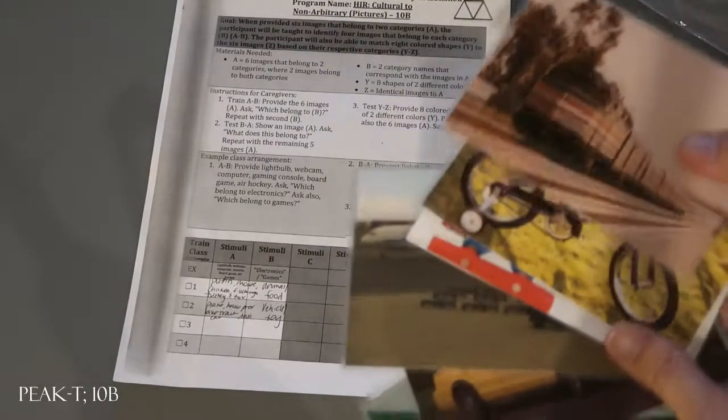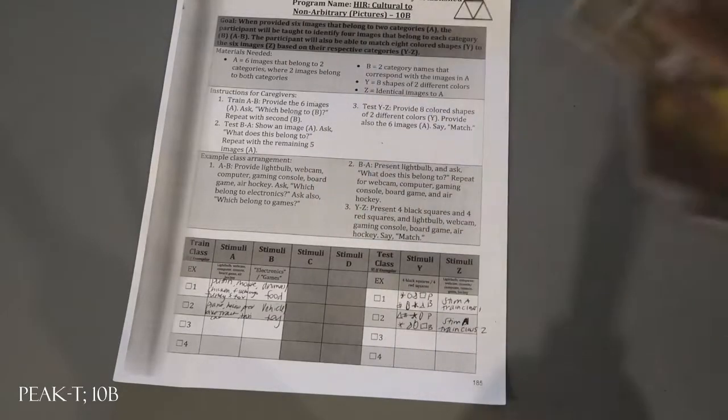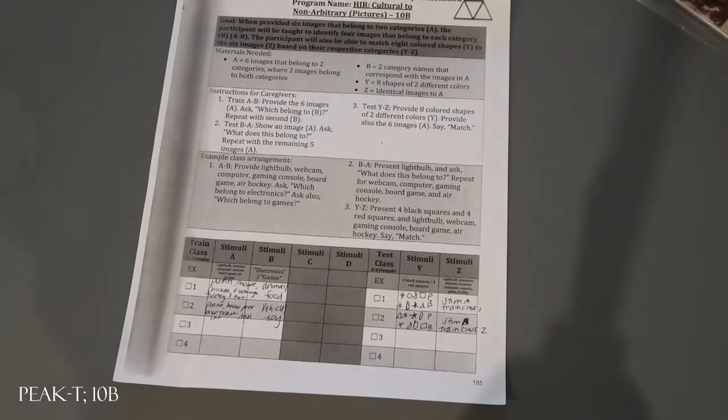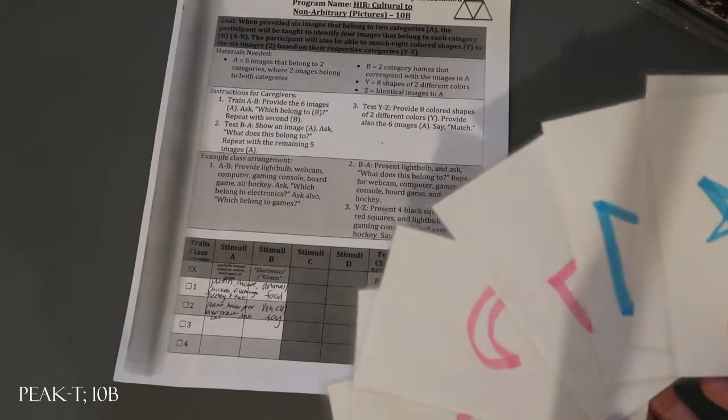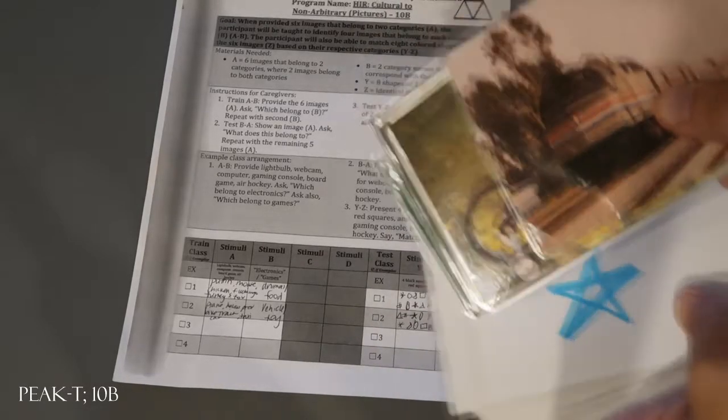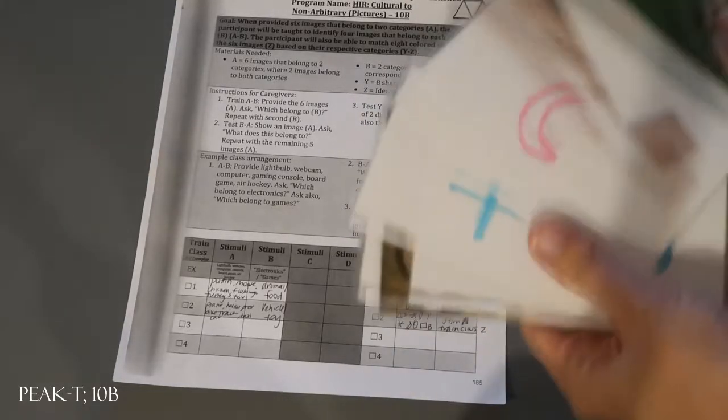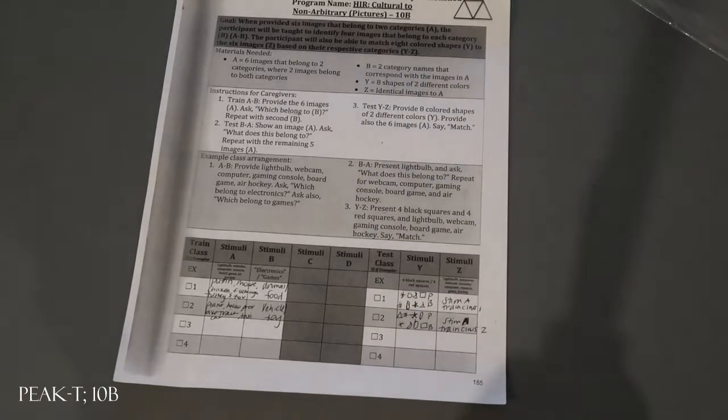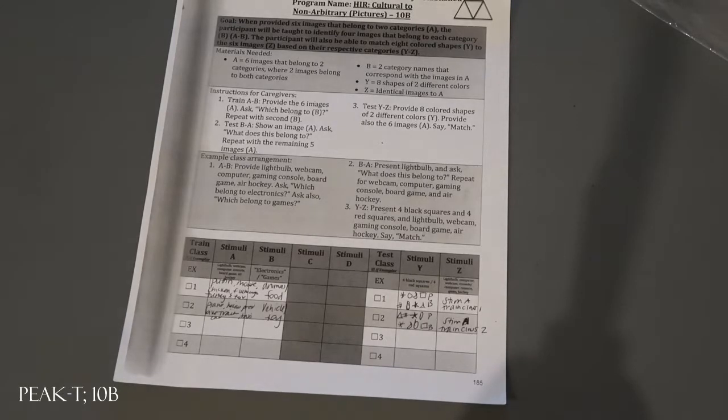So then for the third block, test Y to Z, you're going to mix the eight colored shapes of two different colors and your six pictures. You're going to mix them up, hand them to the participant, and tell them match. Again, you're testing, you're not providing any feedback, you're not prompting, you're not reinforcing. You're just testing to see if they can match or sort those into the proper categories.